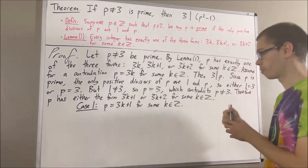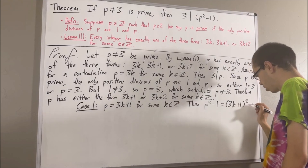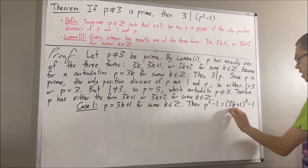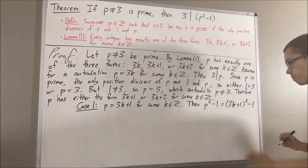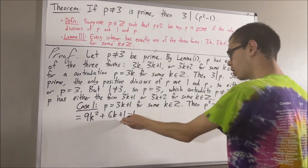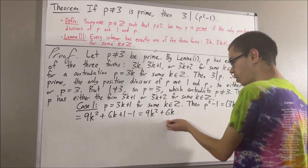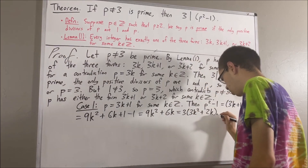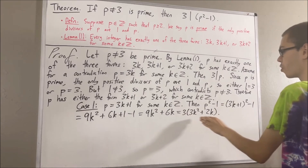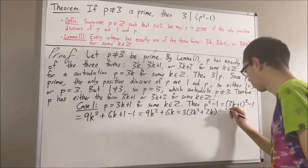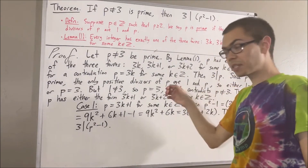What's p squared minus 1 equal to? We can take p and substitute it for 3k plus 1. We know that 3k plus 1 squared is equal to 9k squared plus 6k plus 1. The plus 1 minus 1 cancels out, so we're left with 9k squared plus 6k. From here, we can factor out a 3. So we see that p squared minus 1 is equal to 3 times an integer, meaning 3 is a divisor of p squared minus 1. That is what we wanted to show, so this completes Case 1.